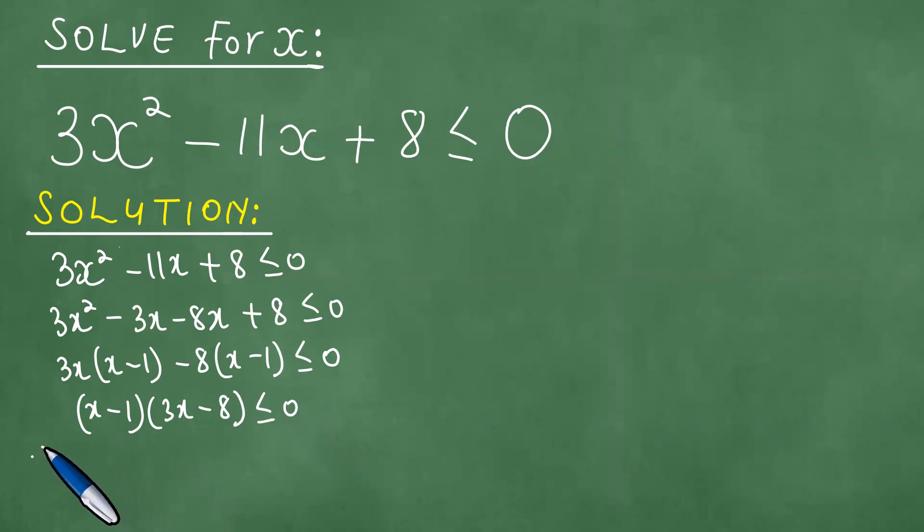Next we look for things we call the critical values. What are the critical values? So the critical values are as follows: x equals 1, x equals 8 out of 3.